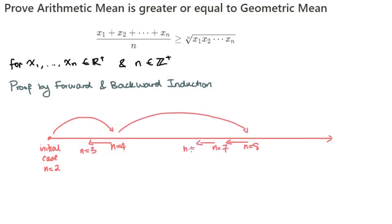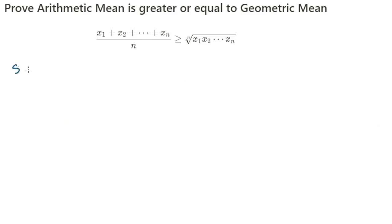So we prove true for n equals k, true for n equals 2k, and then back k minus 1. Step 1: we set up our initial case.